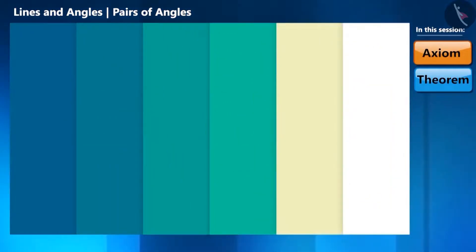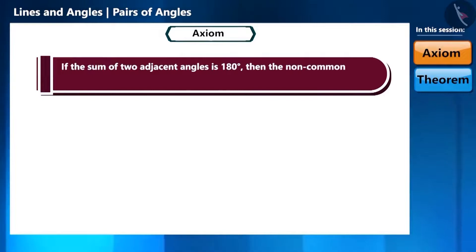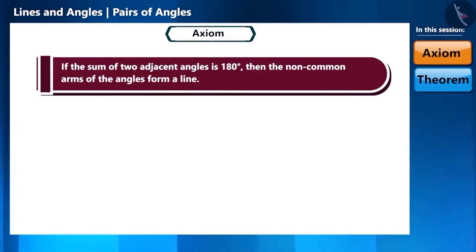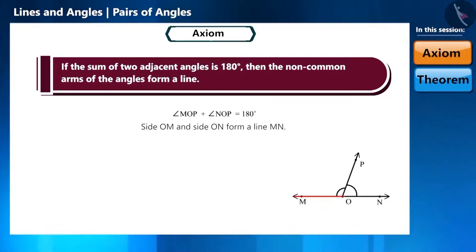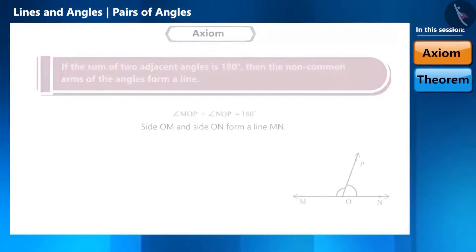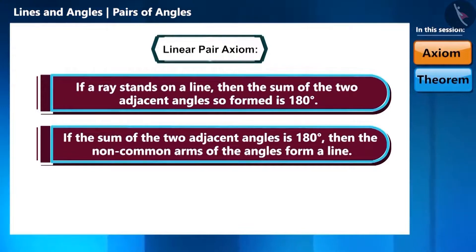Let's move on to the next axiom. If the sum of the two adjacent angles is 180 degrees, then the non-common arms of the angles form a line. That is, if the sum of two adjacent angles is 180 degrees, then the sides which are not the common sides of these angles form a line. Friends, the two axioms that we learnt together are called the linear pair axioms.